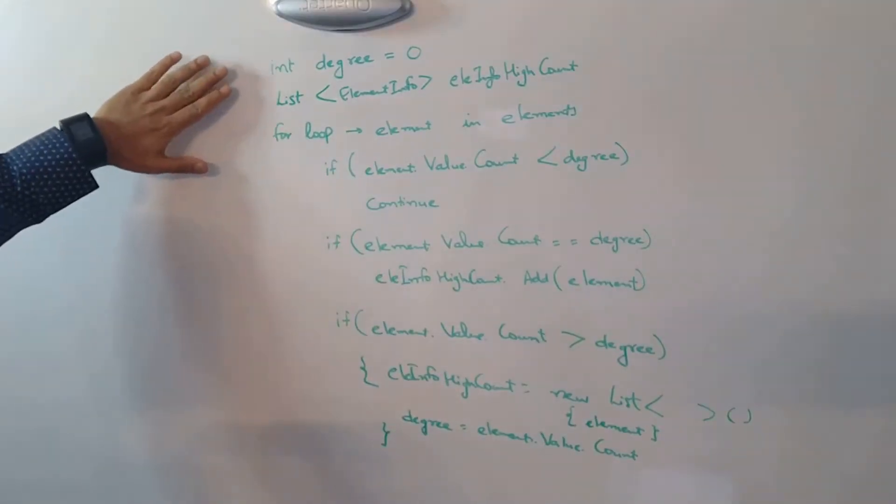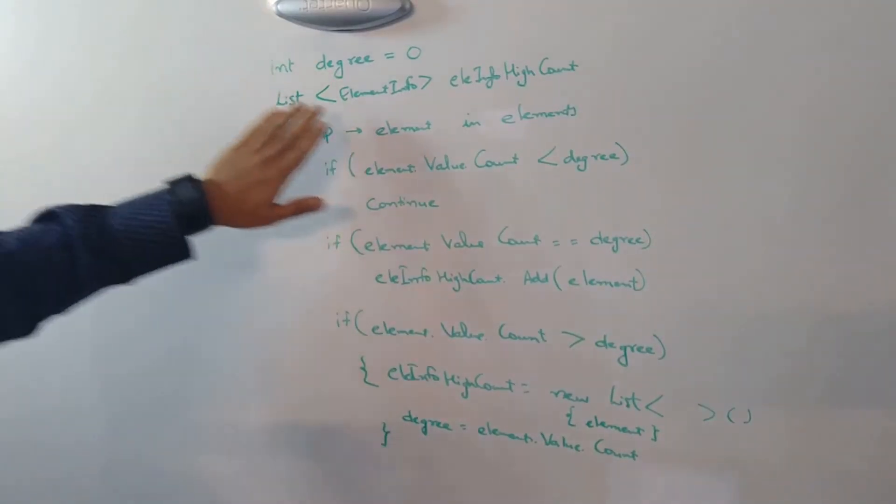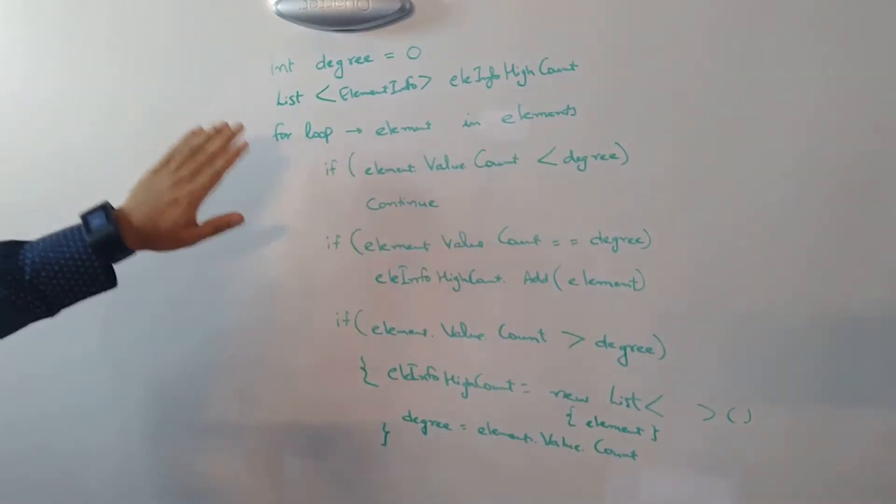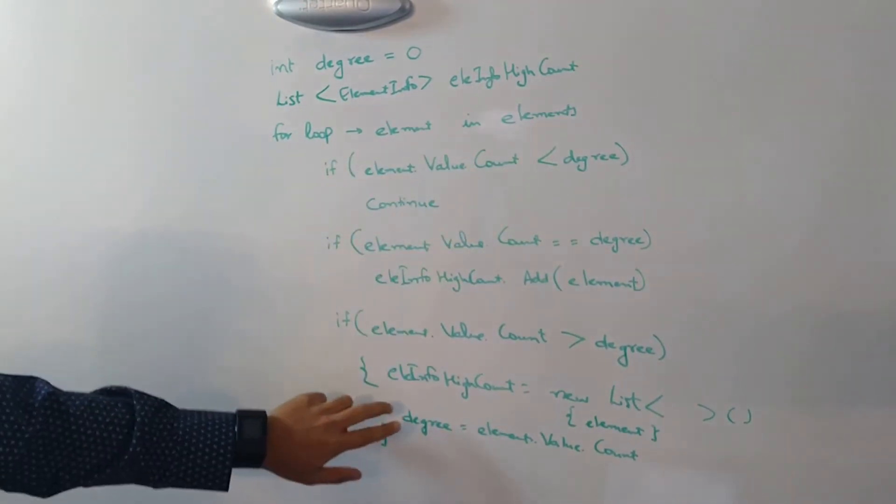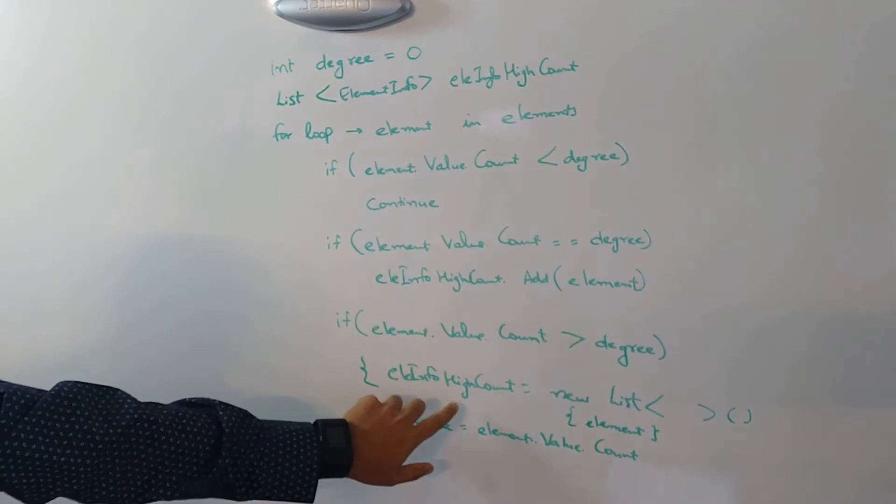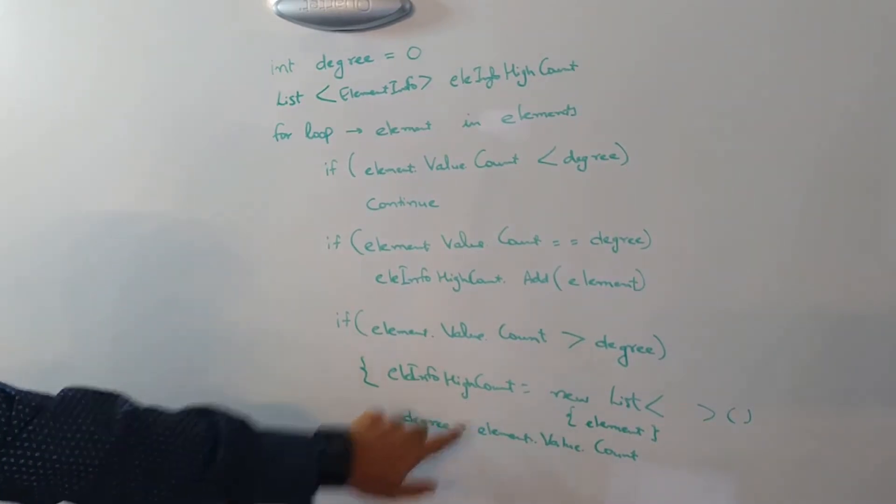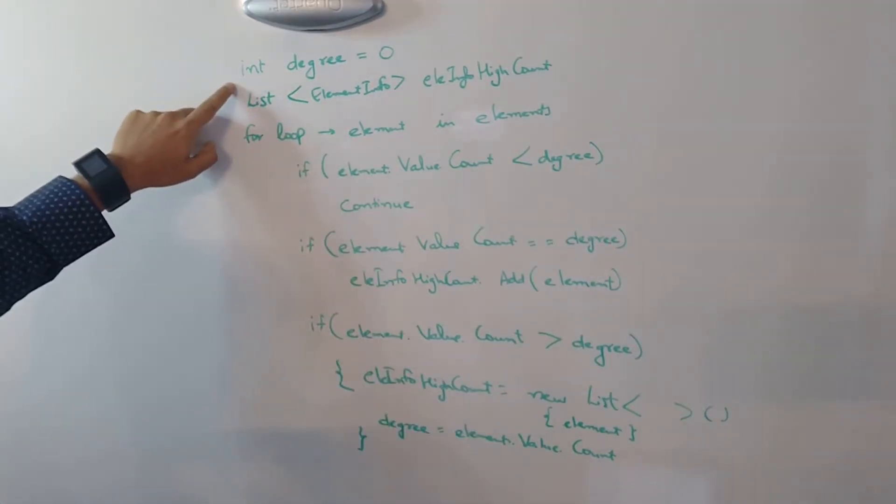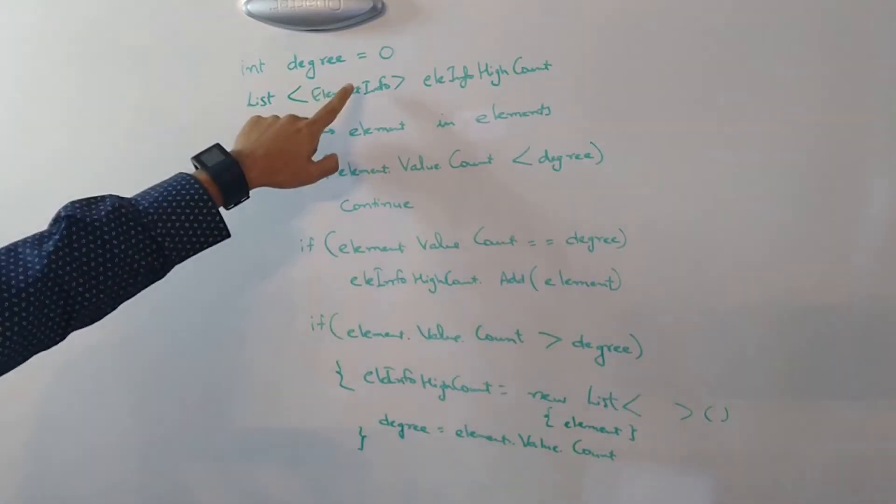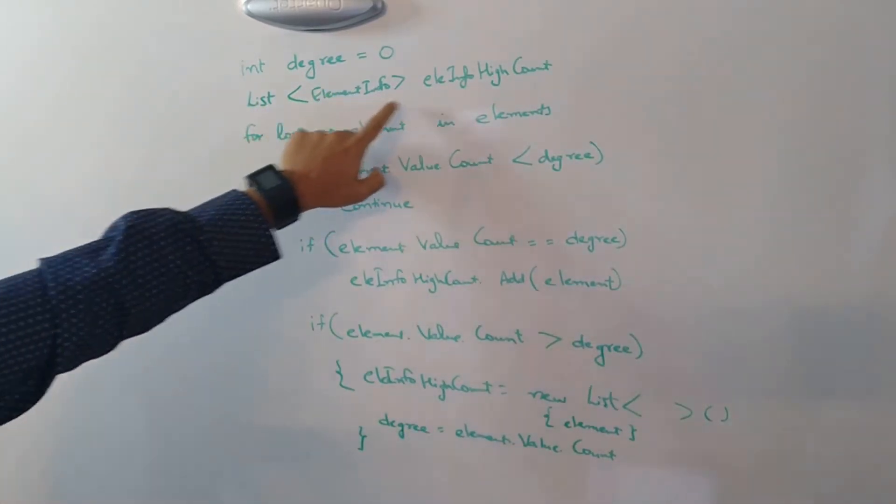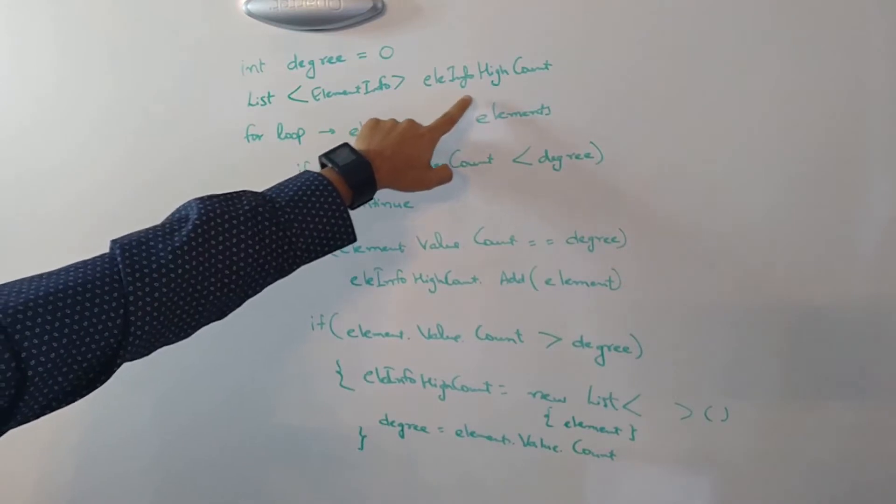Next as you can see here, we loop through the hash map and we try to find the degree as well as the list of elements which have that highest count. So to begin with, we initialize degree to 0 and we have an empty list called element info with highest count.